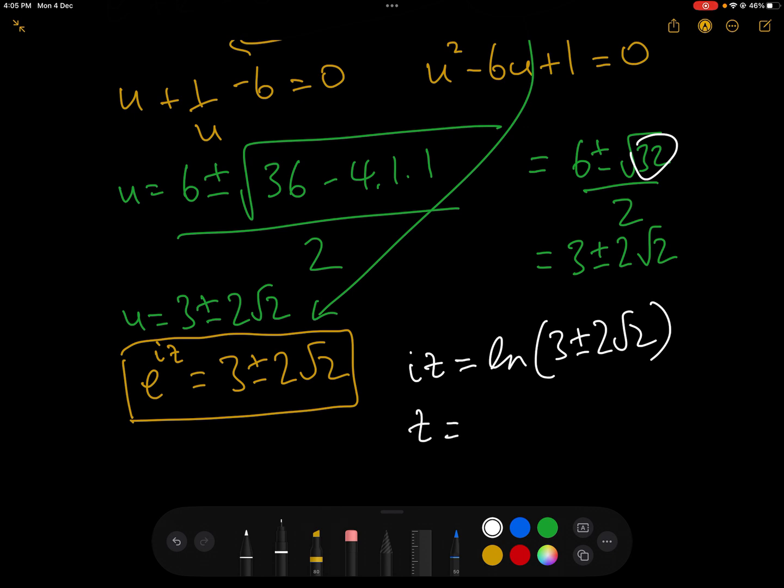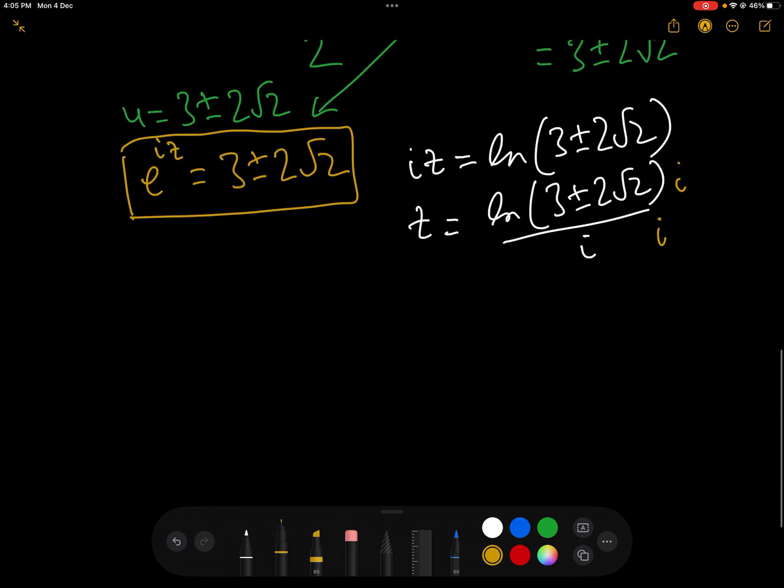And so therefore, z = log(3 ± 2√2)/i. And if we don't want the i on the bottom, let's just multiply top and bottom by i. And we get z = -i·log(3 ± 2√2). And that is the solution to the equation cos(z) = 3.